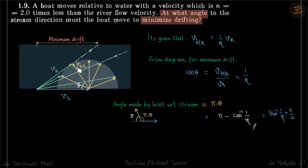Let's solve this. It's given that velocity of boat with respect to river is η times less than velocity of river, so it is vr by η.